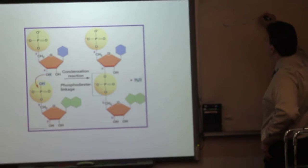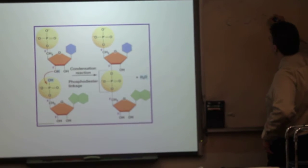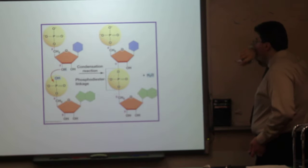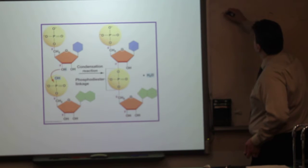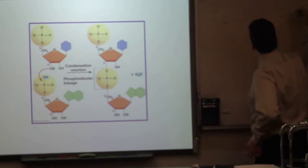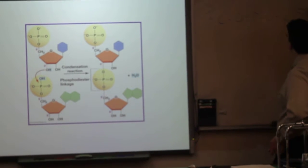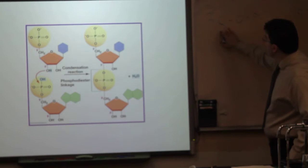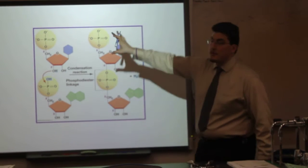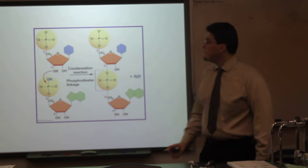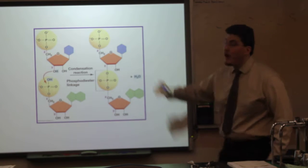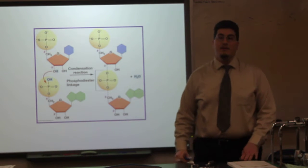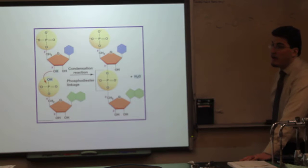C to O to P to O to C. It is from the 3' carbon of the ribose sugar to the 5' carbon of the ribose sugar. This also works for DNA as well.